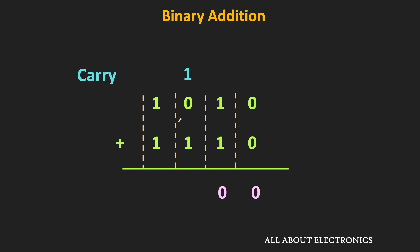Now if we move to the next column, we have a 0 and 1, plus 1 as a carry from the previous column. So effectively we have 1 plus 1, which is once again equal to 0 with 1 as a carry to the next column. Now in this last column, we have two 1s with 1 as a carry from the previous column. So 1 plus 1 plus 1 is equal to 1 with a 1 as a carry. Since there are no more columns, we write it as 11.